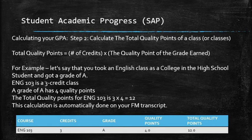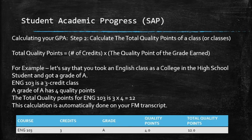The next step in calculating your GPA is determining the total quality points for a class or for whatever classes you're taking. Total quality points is a simple equation: it's the number of credits of the class times the quality point for the grade earned. For example, if you took English 103 — a three-credit class — and got a grade of A, which has four quality points, the total quality points would be 3 times 4, which equals 12. That calculation is automatically done in your FM transcript, but it's important to know how the process works.